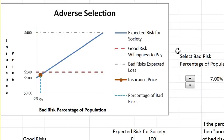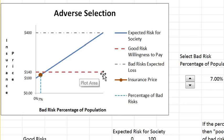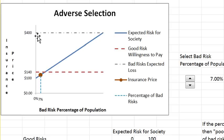You get to select the fraction of the population that is the bad risk, and right now it's set at 7%. This graph with the upward sloping line shows the expected risk for society given that mixture of 7%. The $140 line is the willingness to pay for insurance by the good risk, and the $400 line is the expected loss of the bad risk.